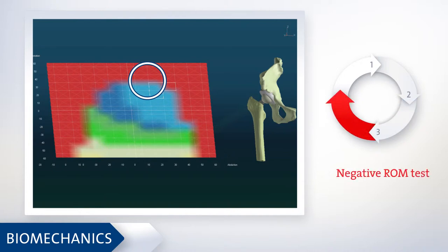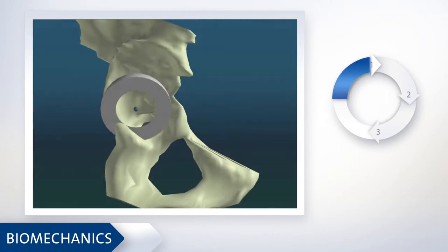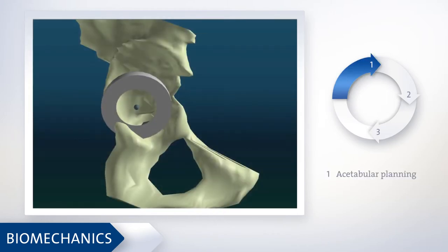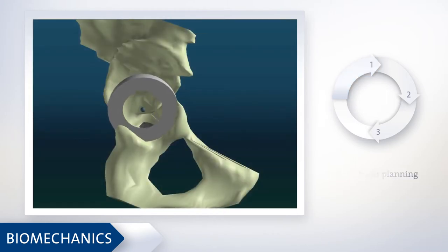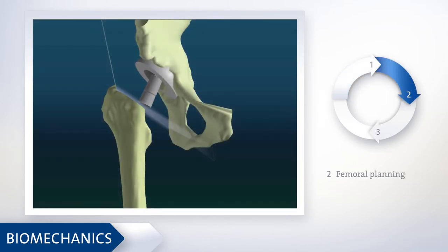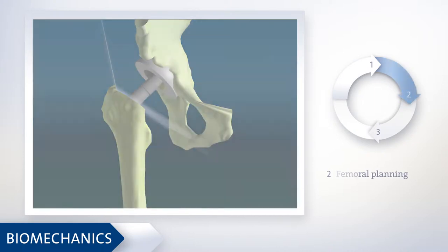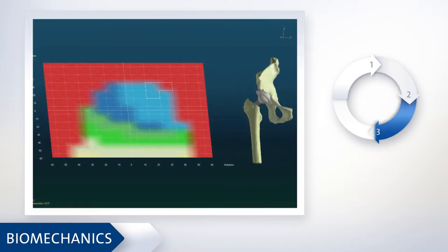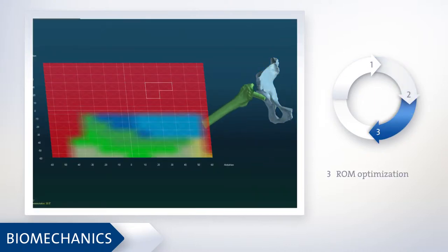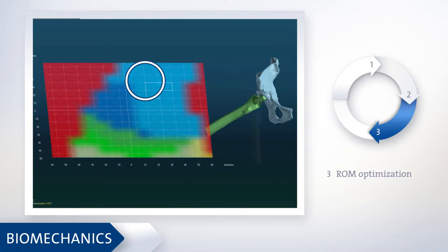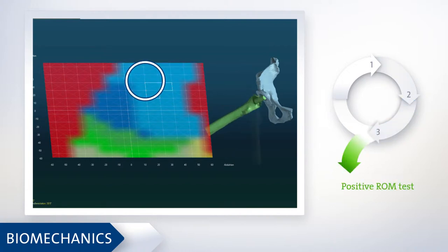In case of a negative ROM test, reconstruction is revised and refined. As soon as the best possible range of motion has been achieved, this step has been completed successfully.